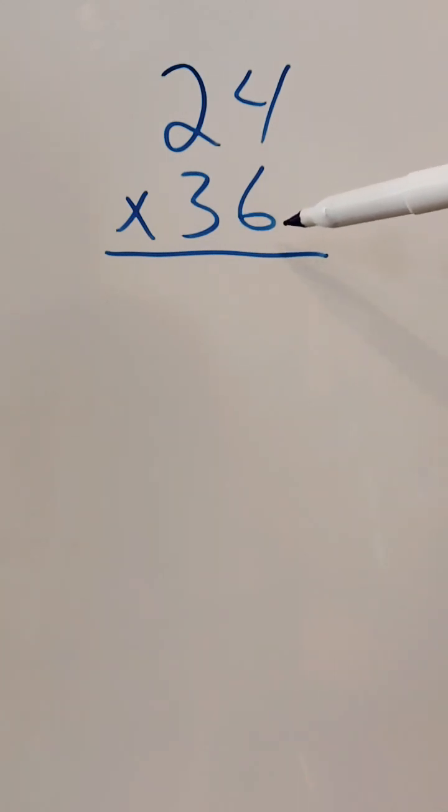Well, the first thing you do is start off on the right here in the ones place on the number on the bottom. You're going to multiply this times each number on top. Then you're going to move over to the tens place and multiply that times each number on top. So let's start doing it right now.